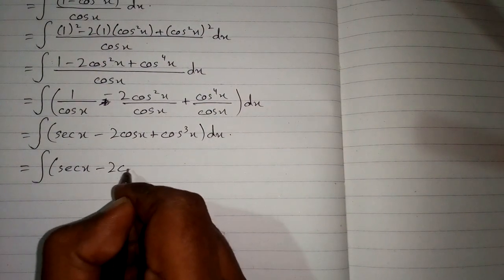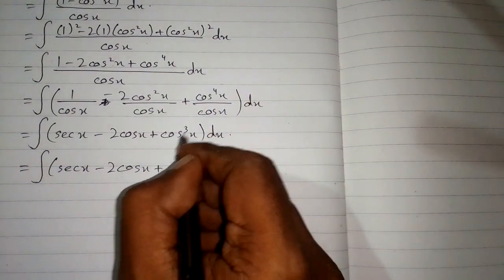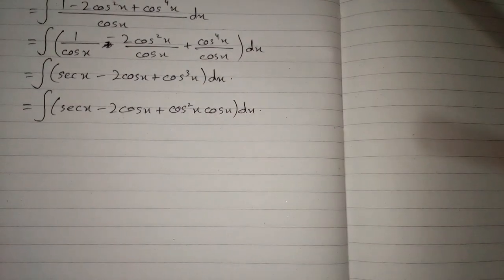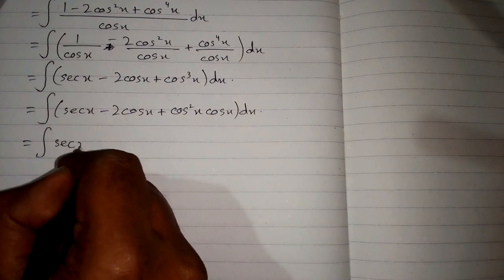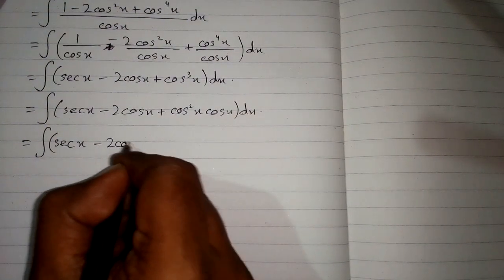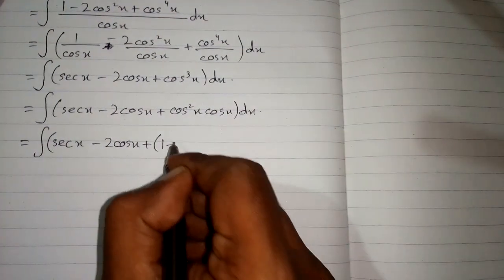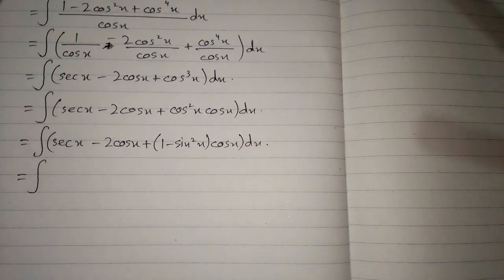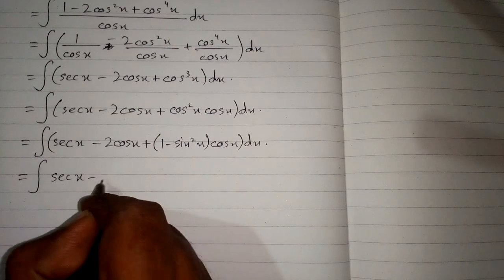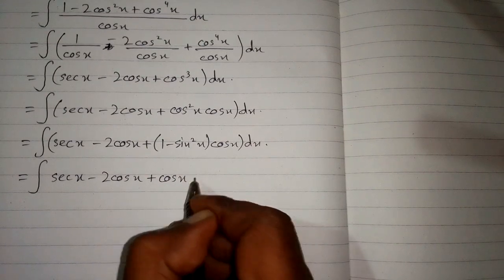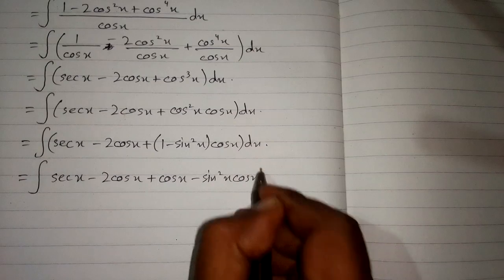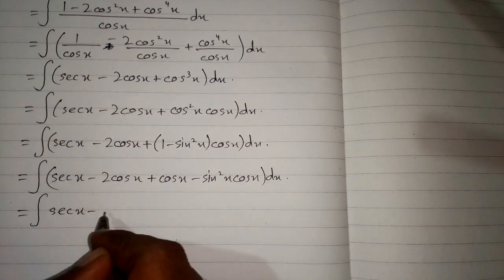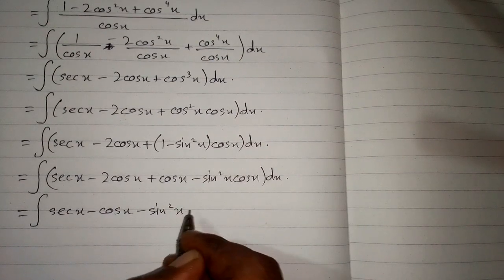Now we rewrite cos cube x as cos square x multiplied by cos x. We then write the integral of sec x minus 2 cos x plus cos square x times cos x. In place of cos square x we substitute 1 minus sin square x, giving us the integral of sec x minus cos x minus sin square x cos x.